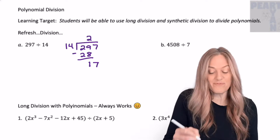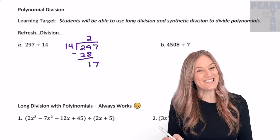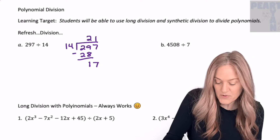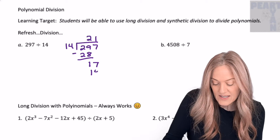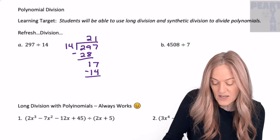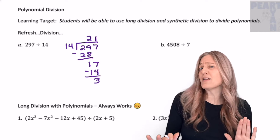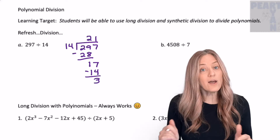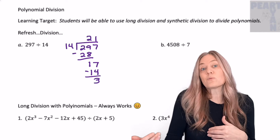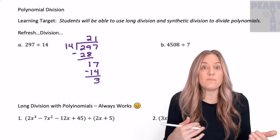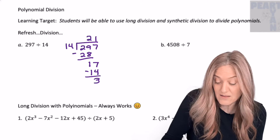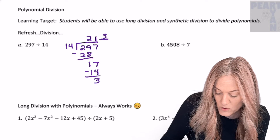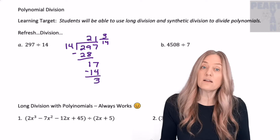Bring down our 7, and then 14 goes into 17 one time. Multiply 1 times 14, subtract, and we have 3 left over. We're not in elementary school, so we're not going to say remainder 3. We're going to say 3 divided by 14, because we still haven't divided 3 by 14. So we have 21 and 3/14ths.